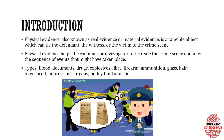First, we must know what physical evidence is. Physical evidence, also known as real evidence or material evidence, is a tangible object which can tie the defendant, the witness, or the victim to the crime scene. Simply put, physical evidence is something we can see or feel physically — objects we can touch — and these evidences can act as a direct link between the victim, the witness, and the defendant.